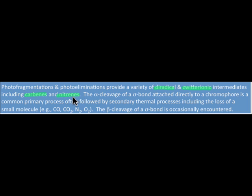What normally happens, once these intermediates are generated, they undergo a variety of secondary thermal processes. In many instances, photo fragmentations involve the loss of small molecules such as carbon monoxide, carbon dioxide, nitrogen, or oxygen.